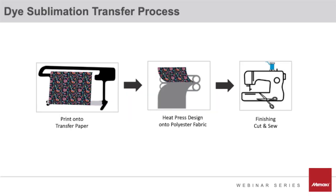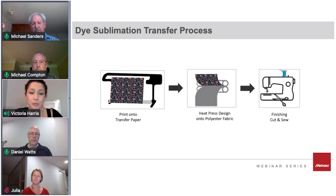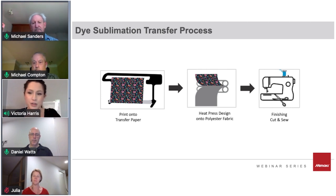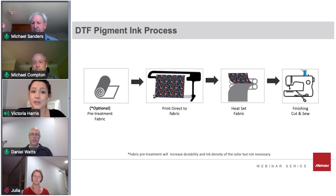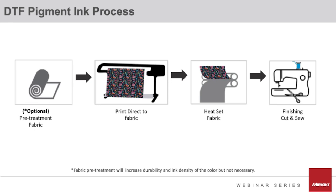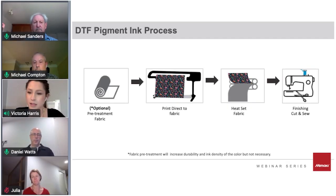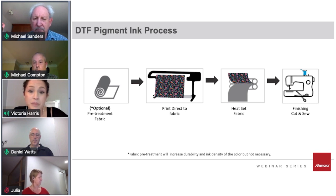For the dye sublimation transfer process, you print onto dye sublimation paper and transfer inks to polyester fabric through heat. The inks go from solid form on the paper to gas through heat application, and back into solid form into the polyester textile, giving excellent wash fastness. For direct-to-fabric pigment ink, you start with fabric — optionally pre-treat it to increase durability, ink development, and density — print directly onto the fabric, then heat-set the inks through a calendar heat press before moving into cut and sew production.